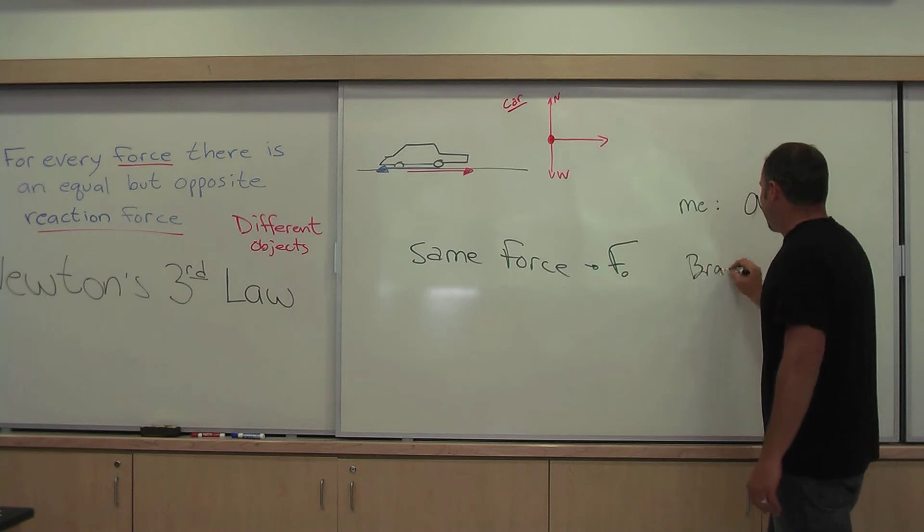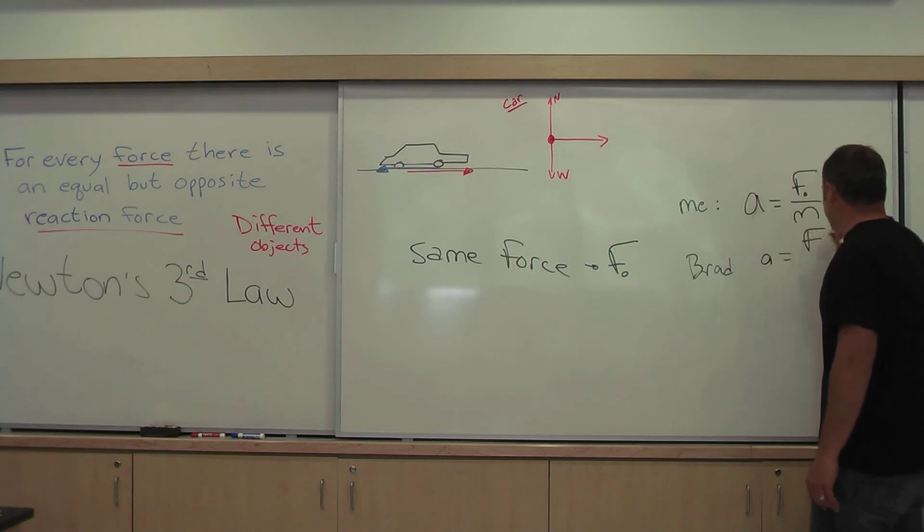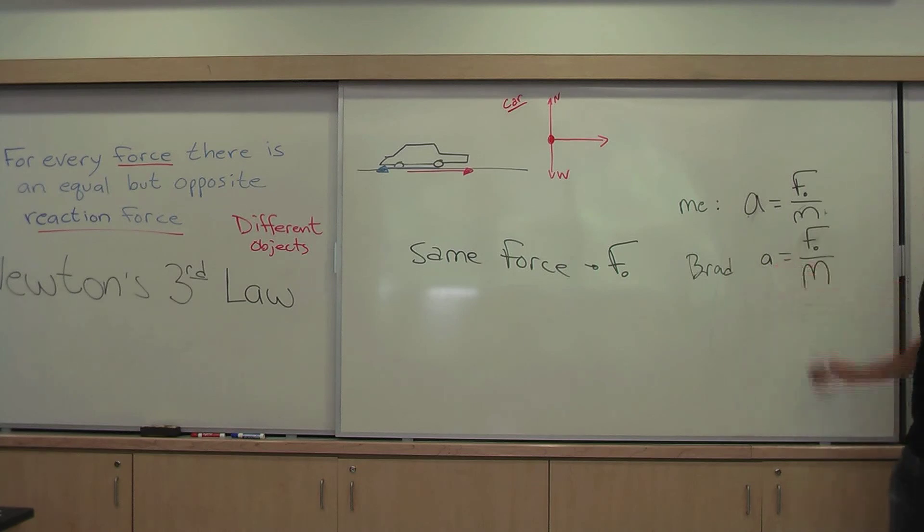But for Brad, his acceleration will be smaller because his mass is larger. You can see as the denominator gets smaller, this number gets bigger. The denominator gets bigger, this number will get smaller.